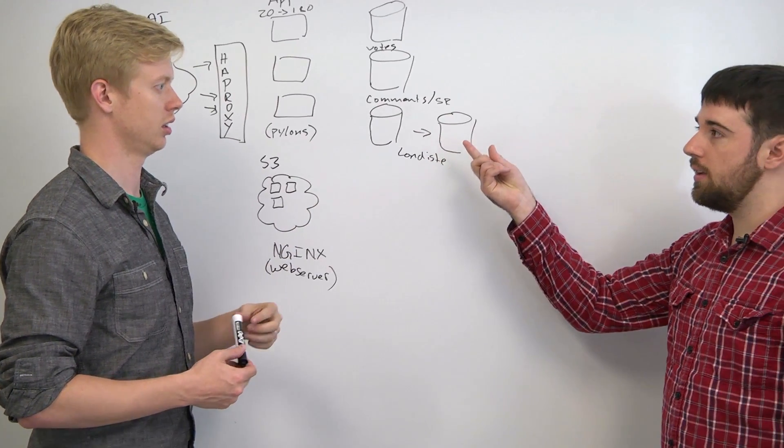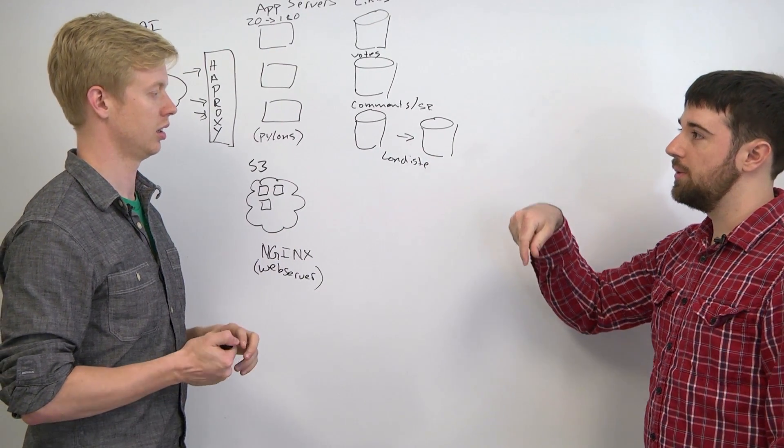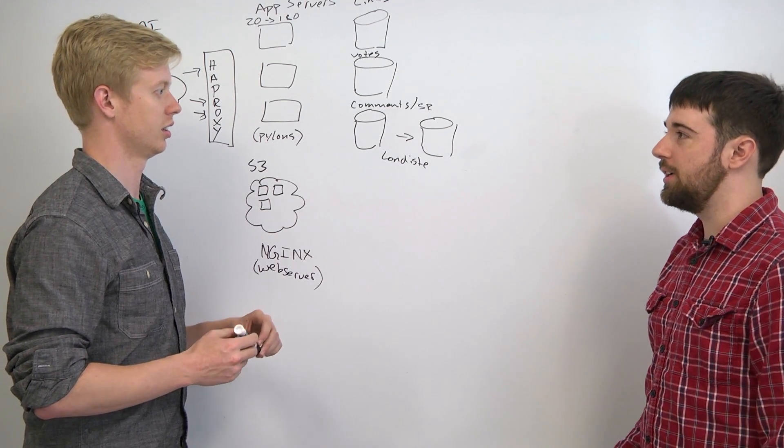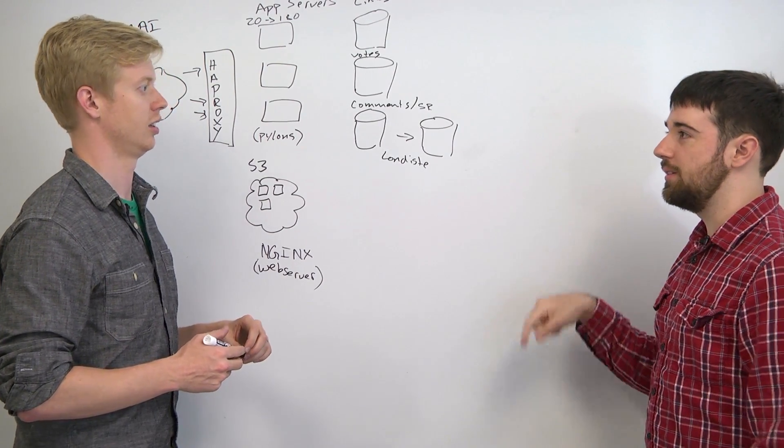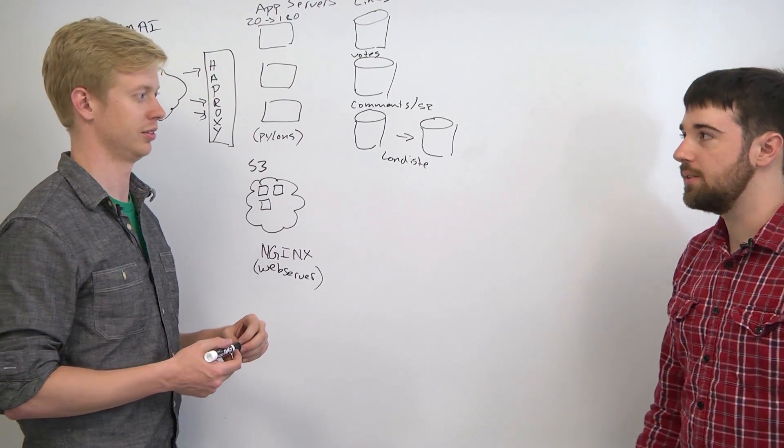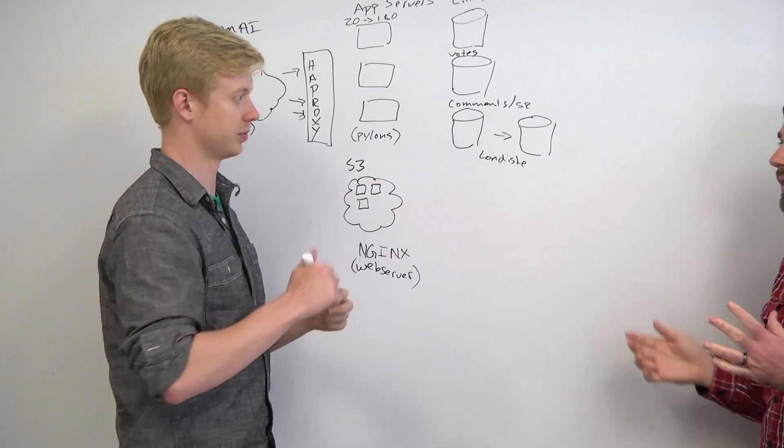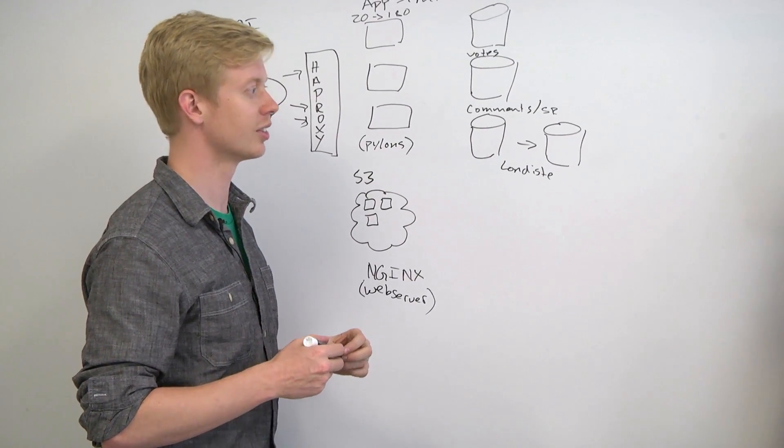When you write to the master, it hits a trigger, which then inserts the same query into a queue, and that's replicated to all the slaves. The same inserts are run on all the slaves. So it actually replays the exact commands. Obviously things like random get pre-calculated.